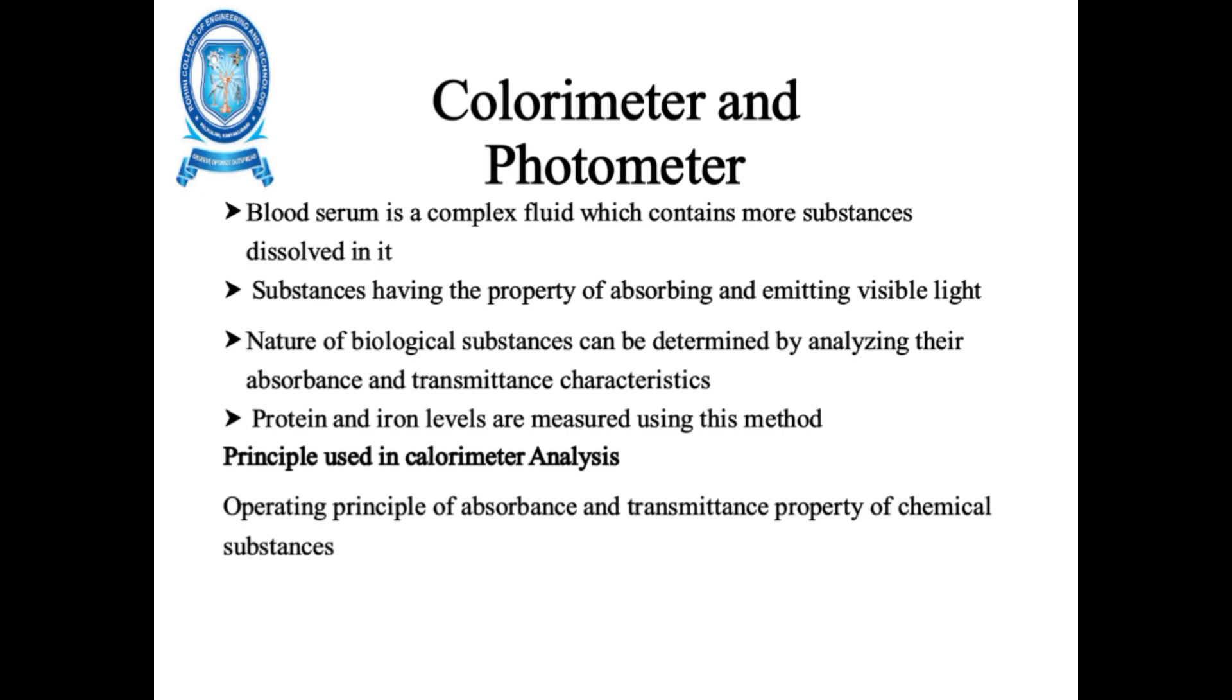The substances have the property of absorbing and emitting visible light. Nature of biological substances can be determined by analyzing their absorbance and transmittance characteristics. The protein and iron levels are measured using this method.